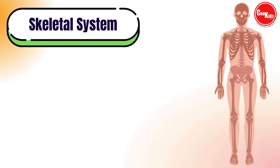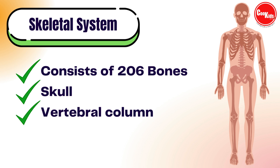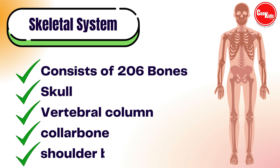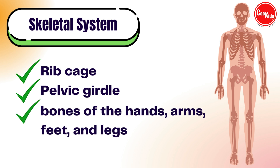Next comes the skeletal system. It consists of 206 bones, including the skull, vertebral column, collar bones, shoulder blades, rib cage, pelvic girdle, bones of hands, arms, feet, and legs.